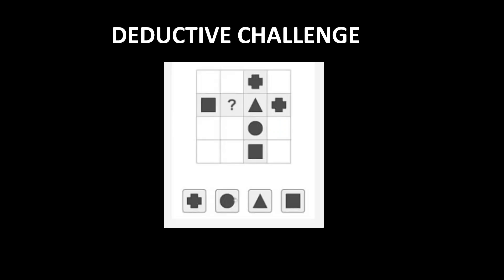The next challenge is the detective challenge. This challenge is similar to a sudoku puzzle, where numbers are replaced with geometrical figures. No geometrical figure can repeat itself more than once in a given row or column. The tip for deductive challenge is to first identify the size of the matrix. Since the size of the matrix is 4x4, you have 4 geometrical figures: a plus, a triangle, and a square — so the missing geometrical figure is a circle. This is a simple level 1 deductive challenge question.